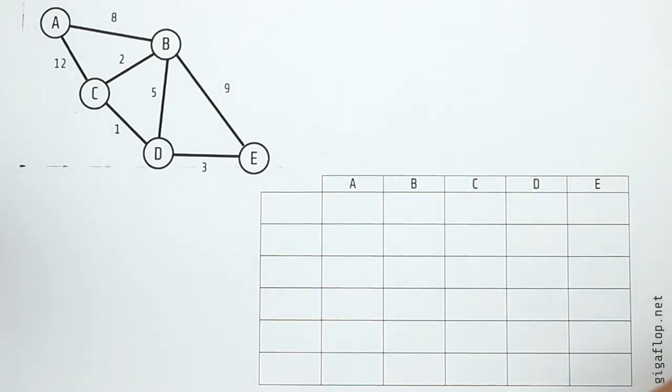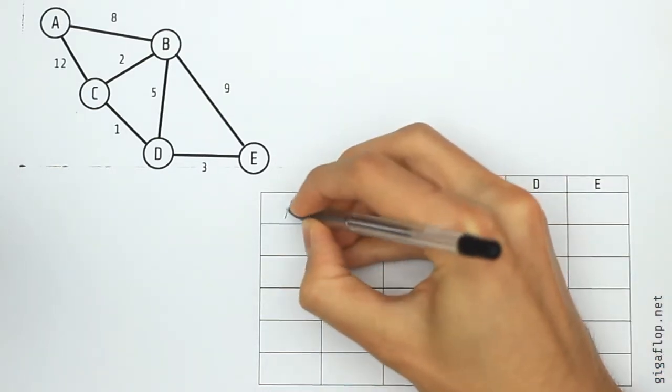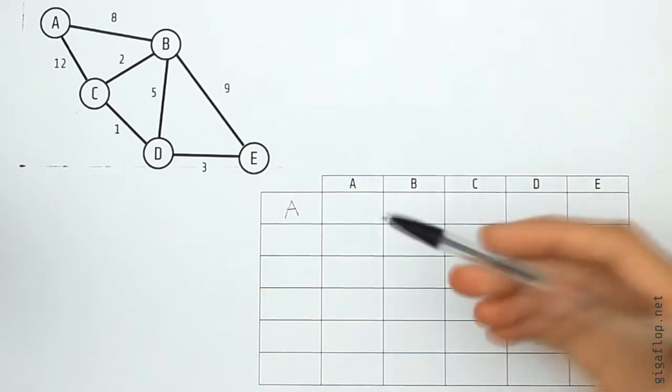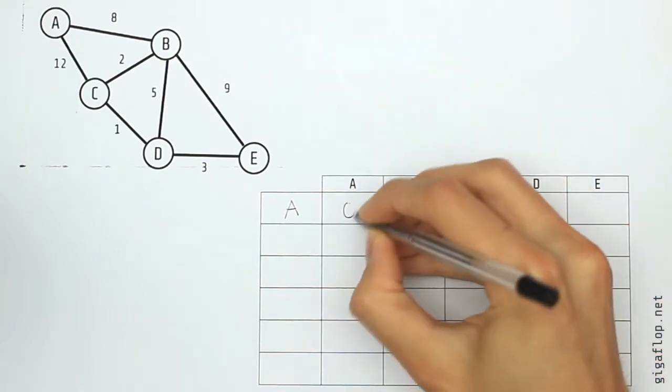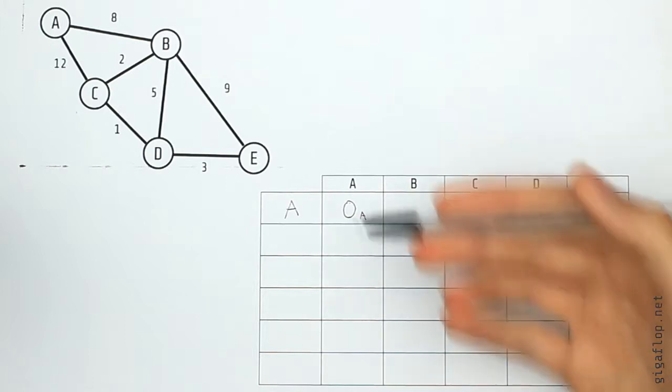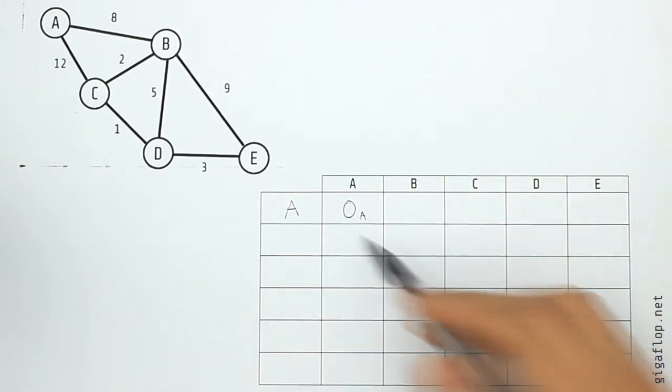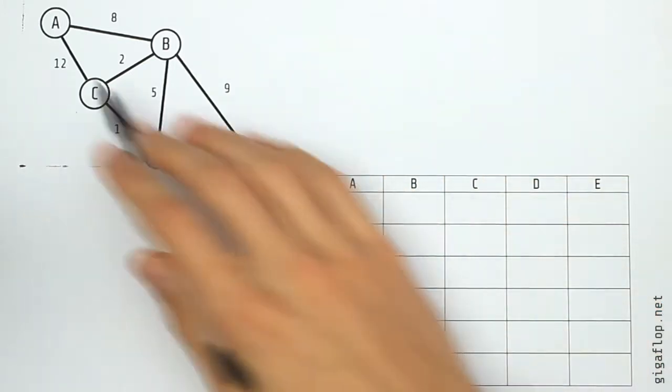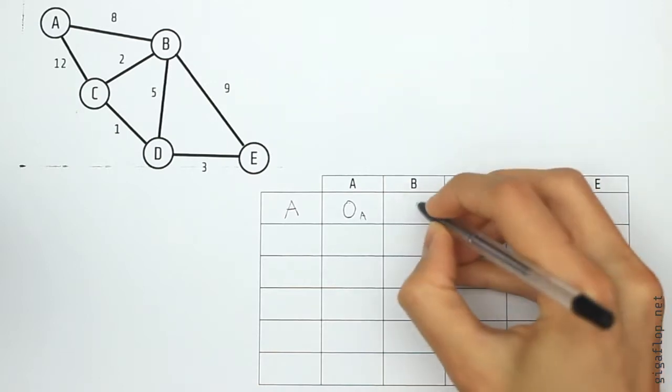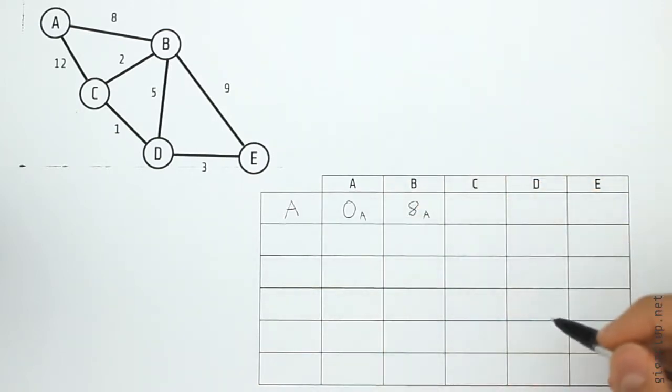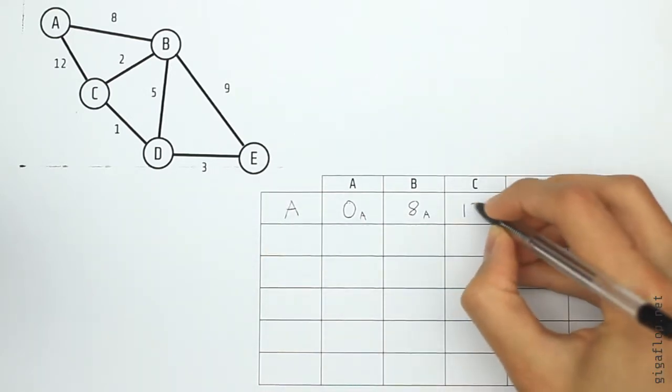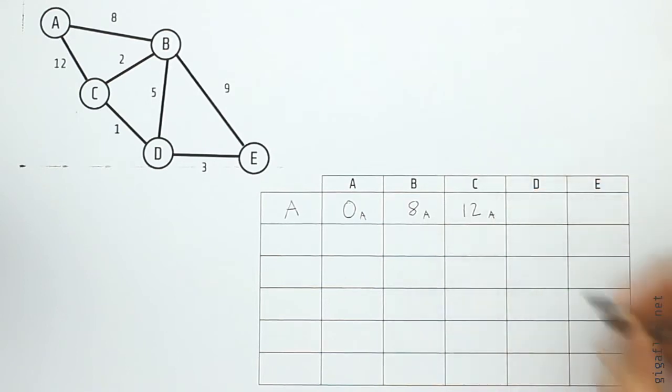So firstly we write down our start node, that's A, and we're going to put that in this box in the table. The next box we fill in is from A to A, and although they're not connected we say they are connected with a weight of zero. And then we put a subscript A to say that's where the weight came from. Now we've got to fill in A to B, and they are connected with an arc of length eight. So we write down eight, again with a subscript A to say that's where we came from. Next is C. A to C is connected with an arc of length 12, so we write down 12, and again subscript A.